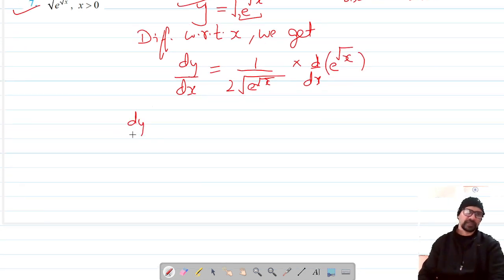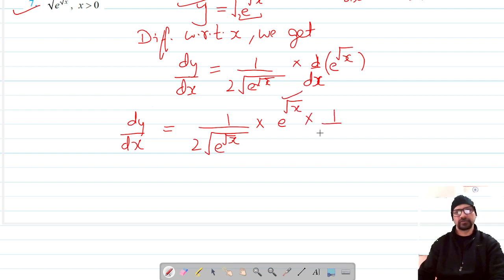Now dy by dx is equal to 1 upon 2 under root e raised power root x into differentiation of e raised power root x. E raised power x is e raised power x, and differentiation of root x is 1 by 2 root x.